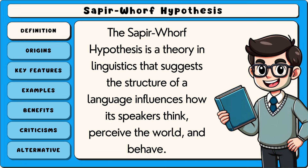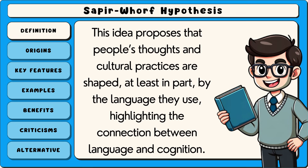The Sapir-Whorf hypothesis is a theory in linguistics that suggests the structure of a language influences how its speakers think, perceive the world and behave. This idea proposes that people's thoughts and cultural practices are shaped, at least in part, by the language they use, highlighting the connection between language and cognition.